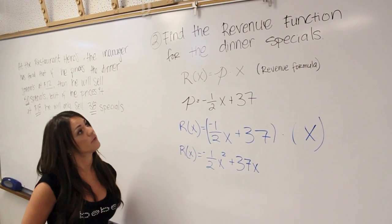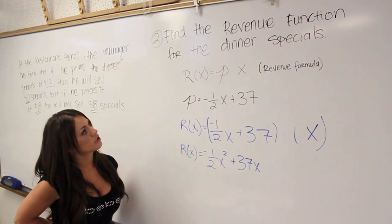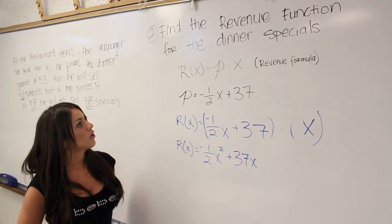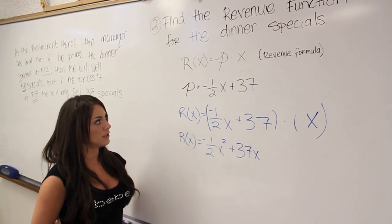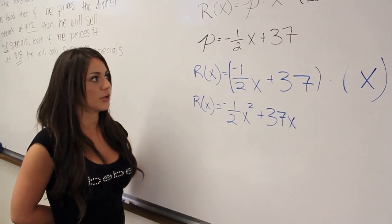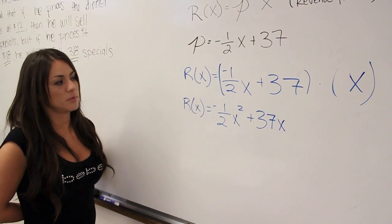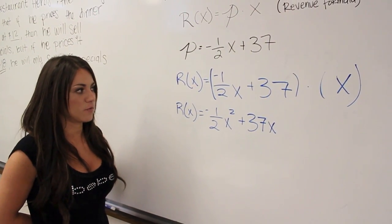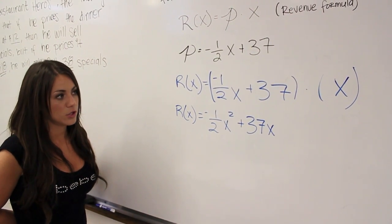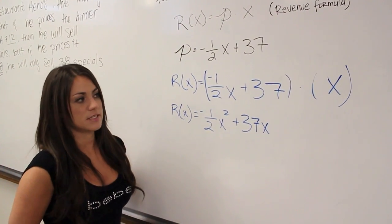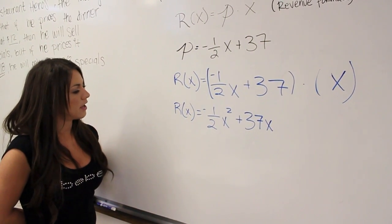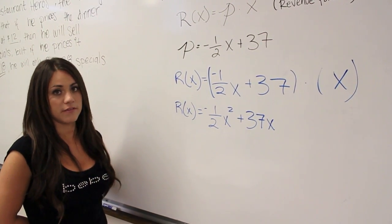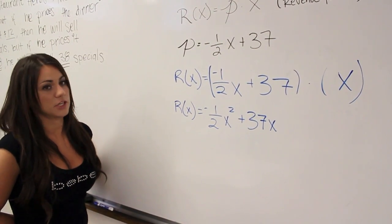Now we define our revenue function for the dinner specials. Our revenue function equals p, our demand function, times X. Our demand function is p equals negative 1 half X plus 37. Once we plug that into our formula, we get R(X) equals (negative 1 half X plus 37) times X, which gives us the revenue function R(X) equals negative 1 half X squared plus 37X.